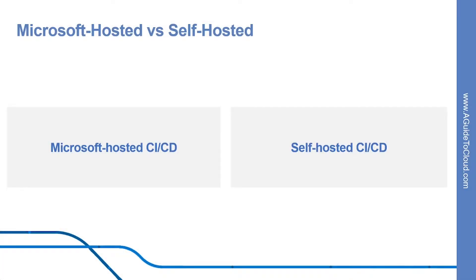Let's look into Microsoft hosted versus self-hosted. One parallel job in Azure Pipeline will let you run a single build or release job at any given time. This rule is true whether you run a job on Microsoft hosted or self-hosted agents. First, let's understand Microsoft hosted CICD.